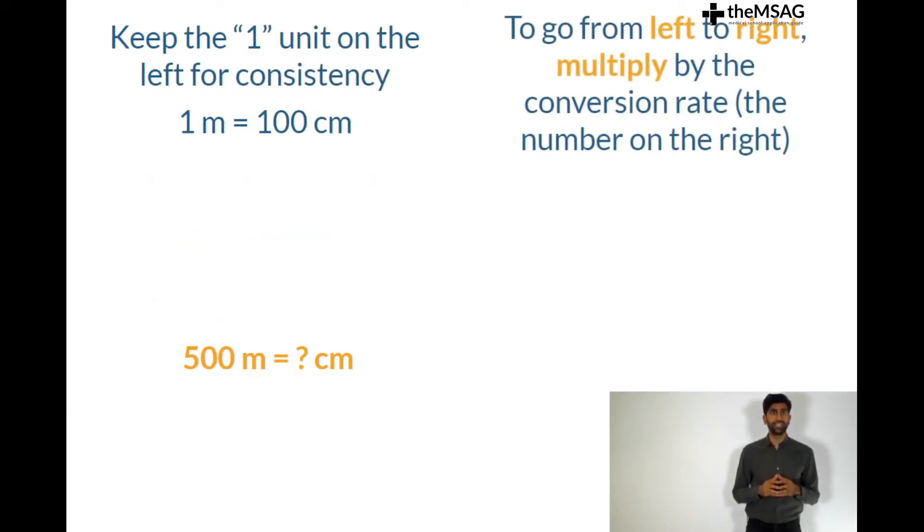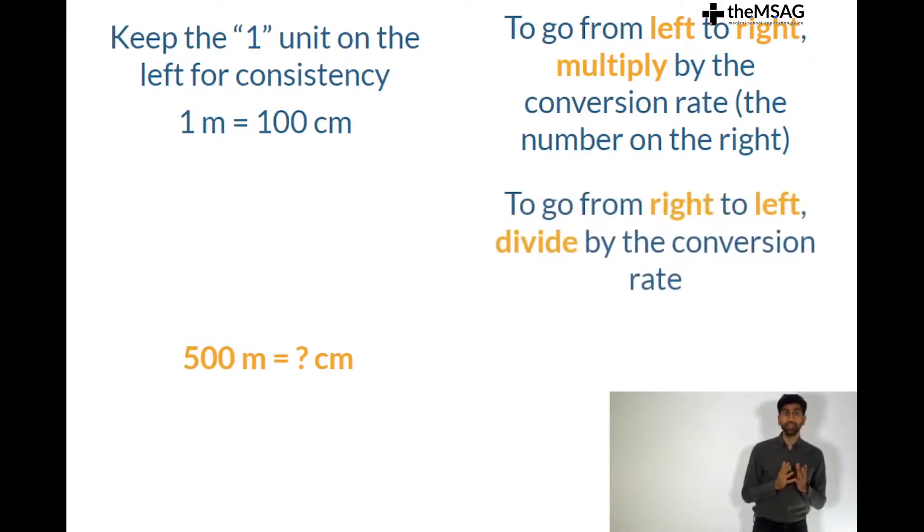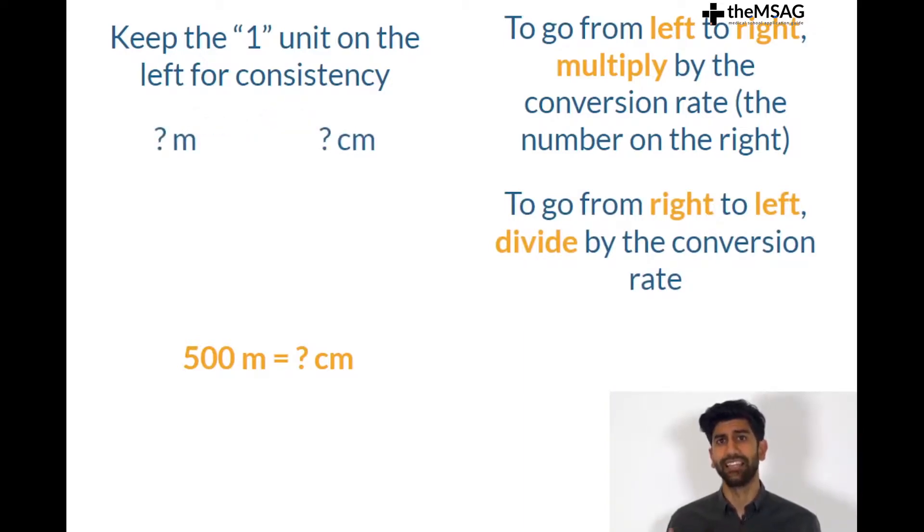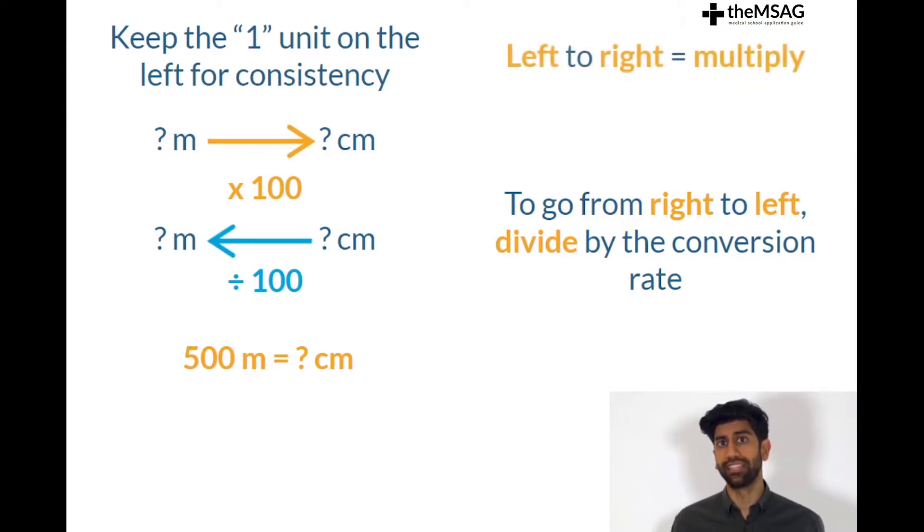To go from left to right you multiply by the conversion rate which is just the number on the right. To go from right to left you divide by the conversion rate. In this example to go from meters to centimeters left to right we multiply by 100. To go from centimeters to meters right to left we divide by 100. Left to right multiply, right to left divide.